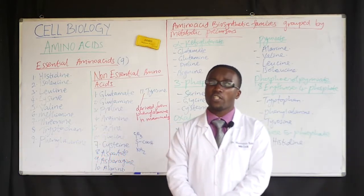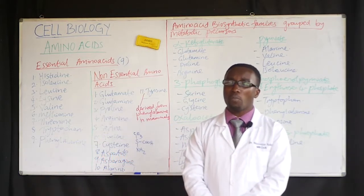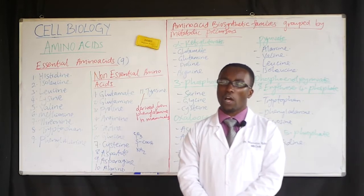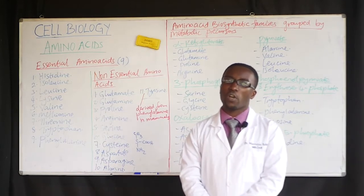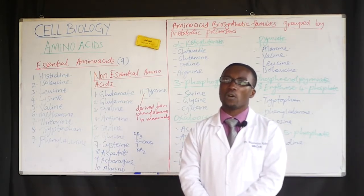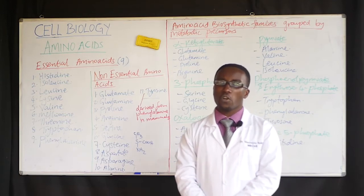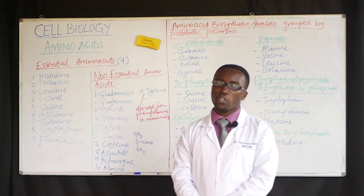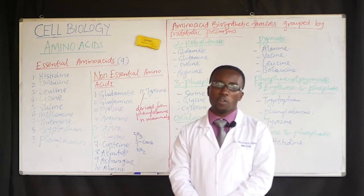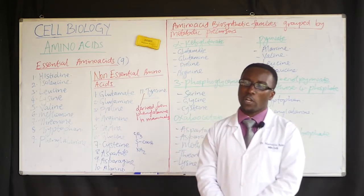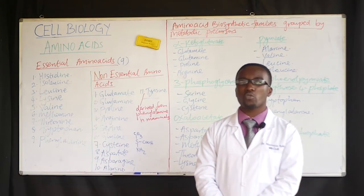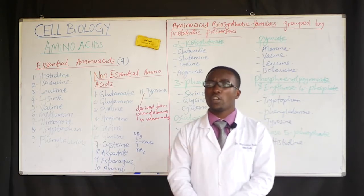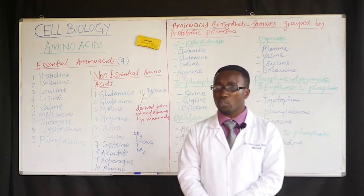Amino acids are the building blocks of peptides, polypeptides, and proteins, which are the raw materials of our body tissues, organs, and physiological and biochemical molecules. When I talk about physiological molecules, you need to know that hemoglobin is one of those.